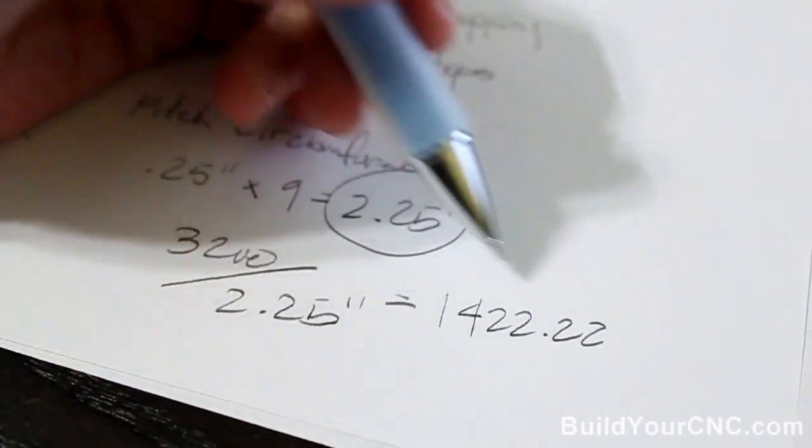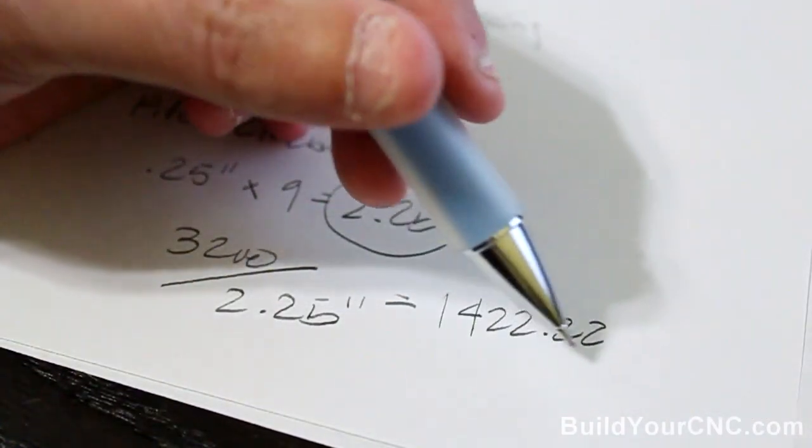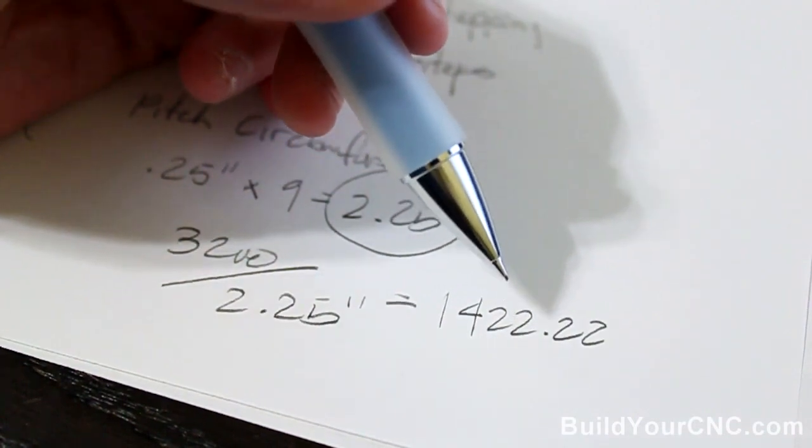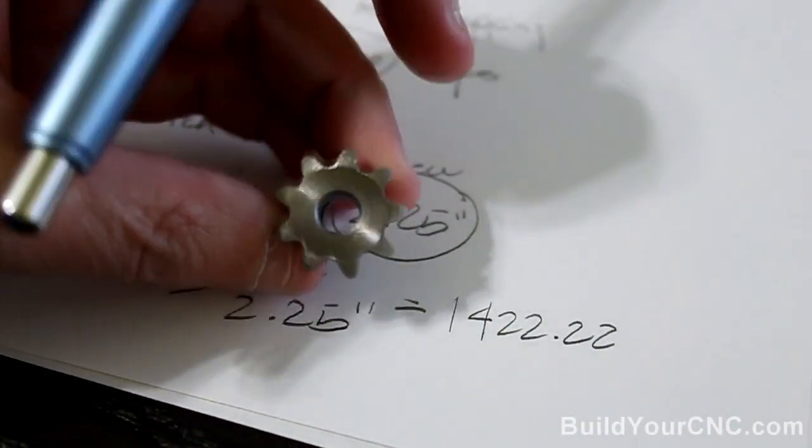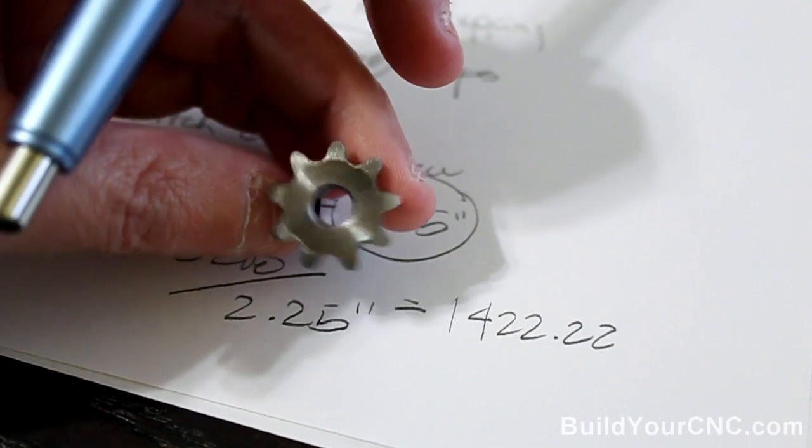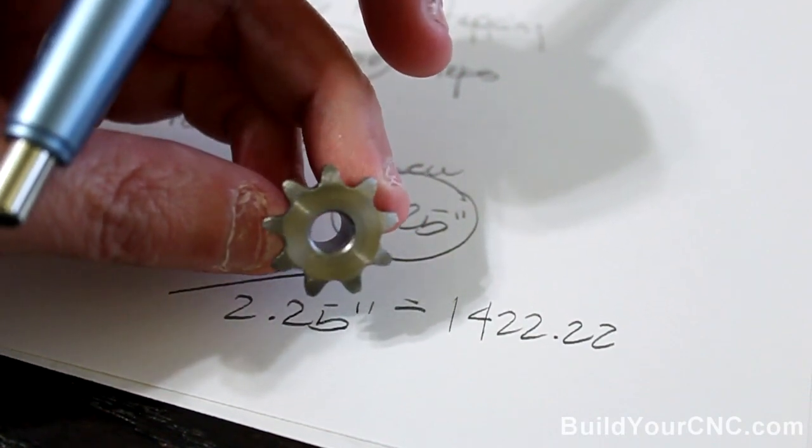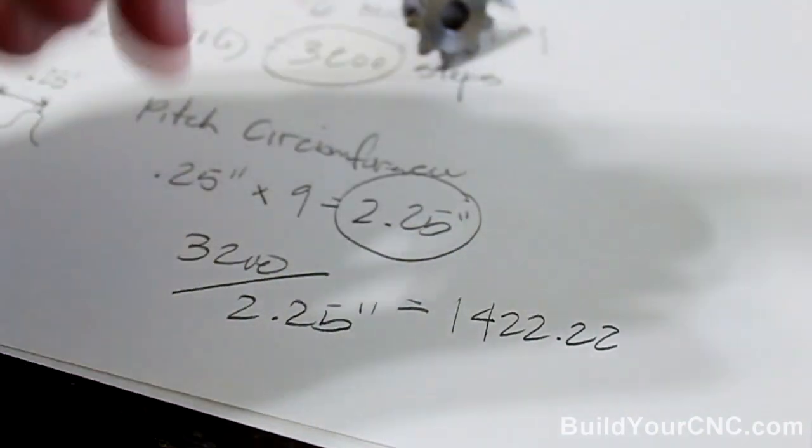But this is actually only going to be a temporary number. As I said earlier, this is a theoretical number. It is based on the drive sprocket and theoretically how the pitch that it has. And we need to figure out the real world number of steps we're going to get to.